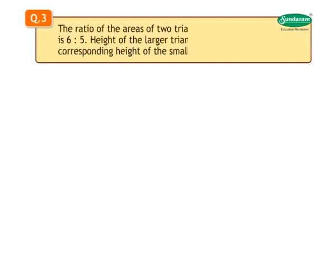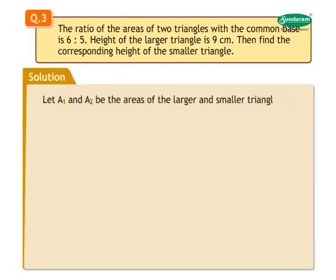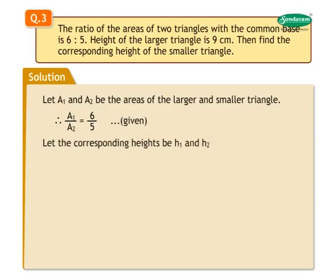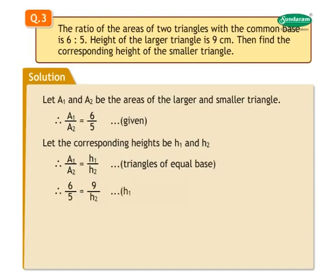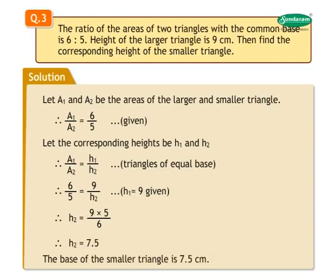Question 3. The ratio of the areas of two triangles with a common base is 6 is to 5. The height of the larger triangle is 9 centimeters. Find the corresponding height of the smaller triangle. Solution: Let A1 and A2 be the areas of the larger and smaller triangle respectively. It is given that A1 upon A2 equals 6 upon 5. Let the corresponding heights be H1 and H2. Therefore, A1 upon A2 equals H1 upon H2 for triangles of equal base. So 6 upon 5 equals 9 upon H2, giving H2 equals 9 into 5 upon 6, therefore H2 equals 7.5. Thus, the corresponding height of the smaller triangle is 7.5 centimeters.